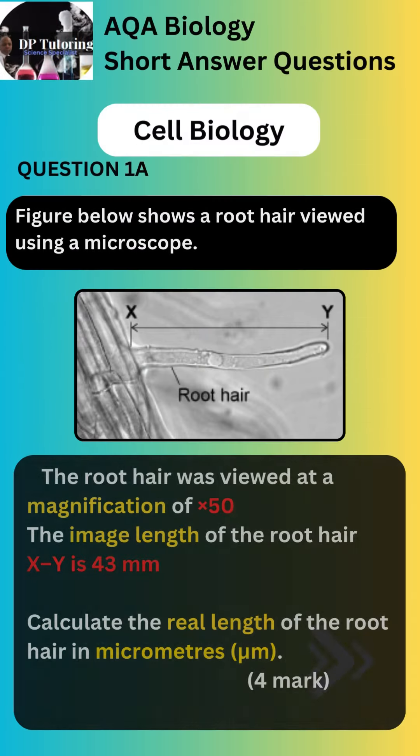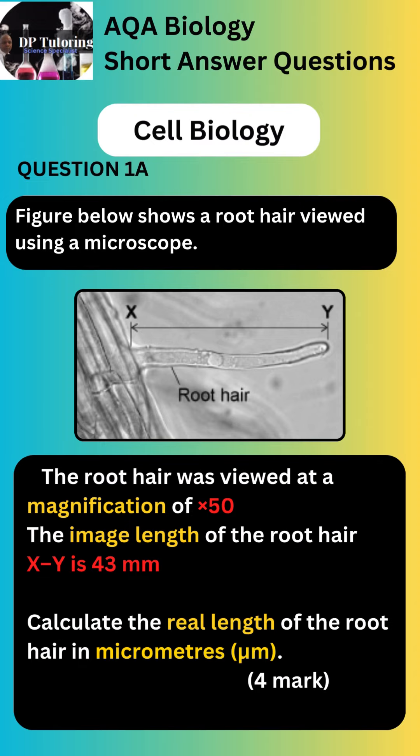Part A of the question provides you with a diagram of a root hair cell observed under a microscope. Some key information provided by AQA is highlighted. You are given the magnification of the root hair cell. You are given the image size, X to Y, on the diagram. You are asked to calculate the real length of the root hair cell. You will need to remember the equation for magnification.